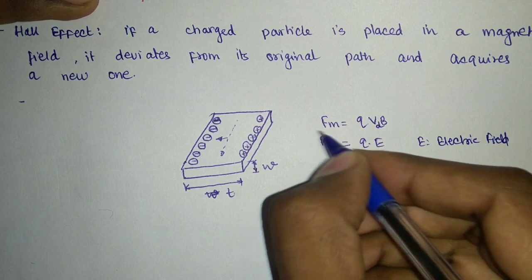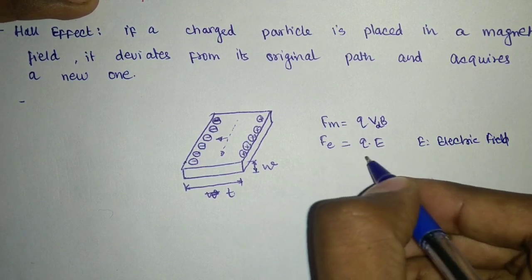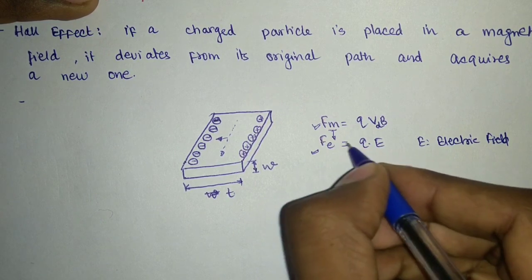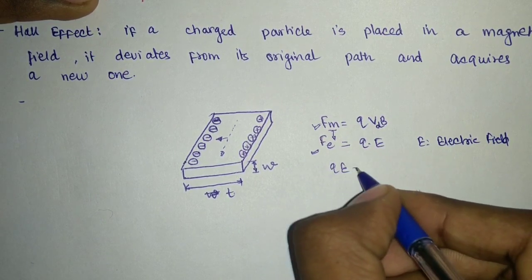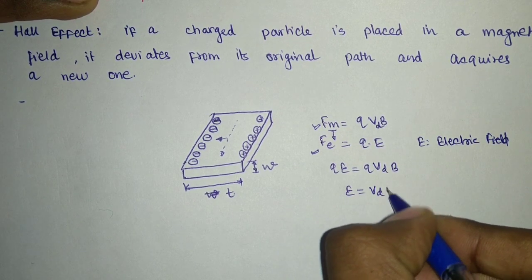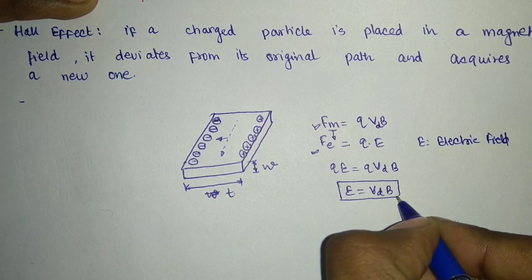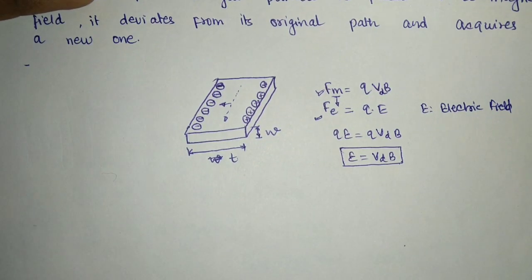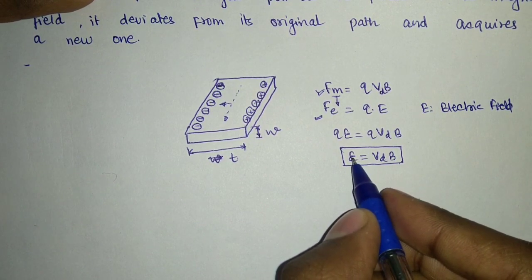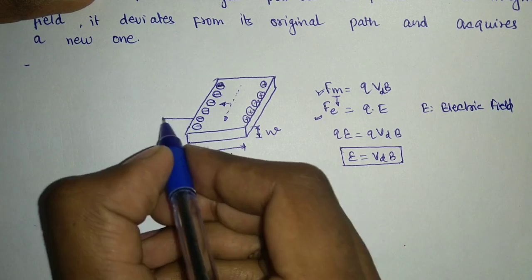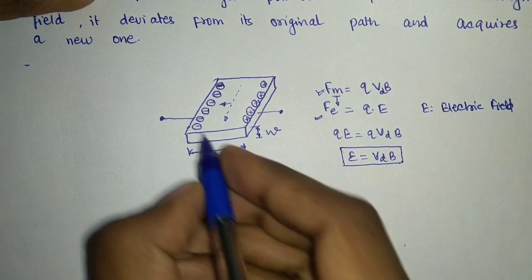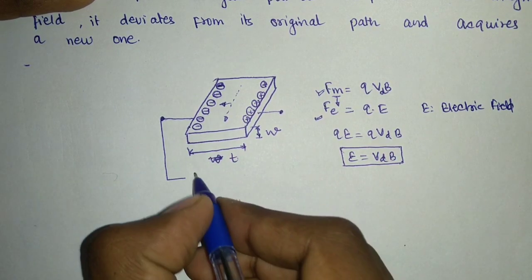In our balanced condition or equilibrium condition, this electric force will be equal to magnetic force, because that magnetic force is only generating the electric force. So Q·E = Q·V·B, and finally the electric field that has been generated is E = VD·B. But what we need finally is the value for the voltage, because we can only measure the voltage across these two points. So that voltage, let's say this is our V0.